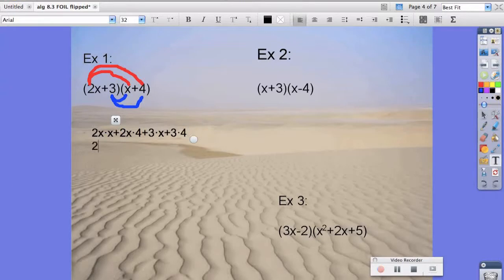So again, that gives us 2x squared plus 8x plus 3x plus 12. And lastly, that's 2x squared plus 11x plus 12.